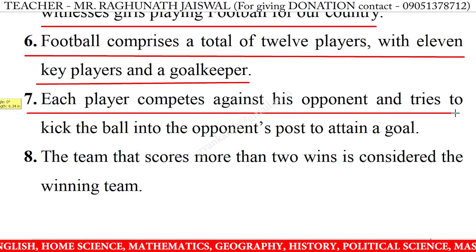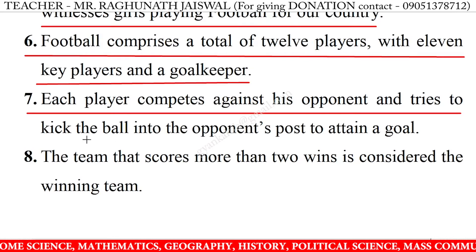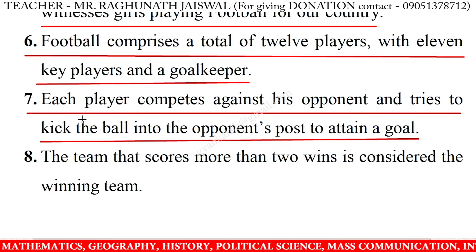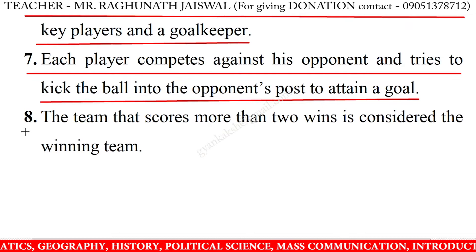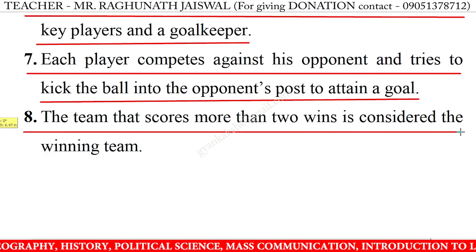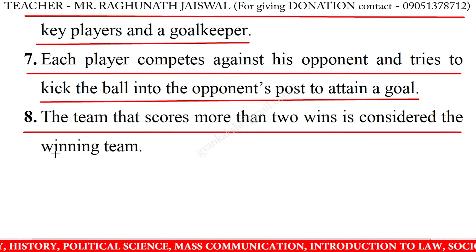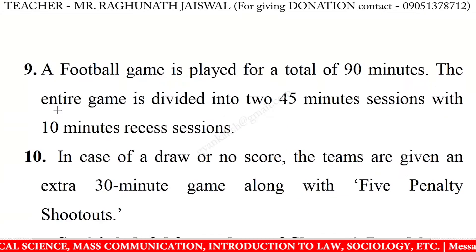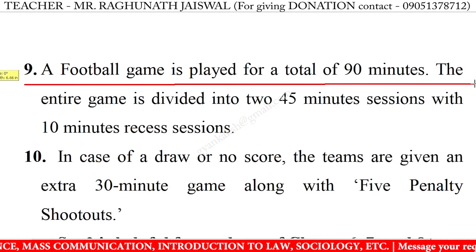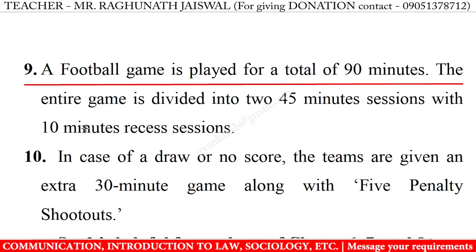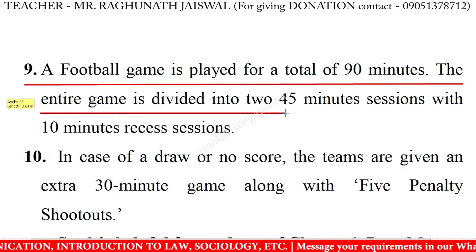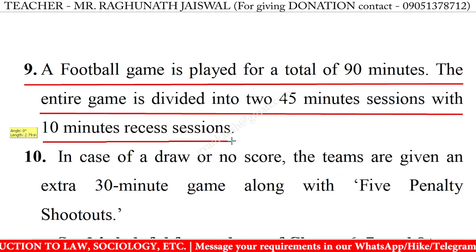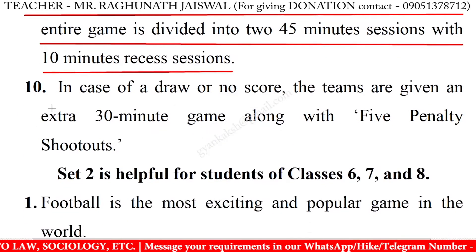6. Football comprises a total of 12 players with 11 key players and a goalkeeper. 7. Each player competes against his opponent and tries to kick the ball into the opponent's post to attain a goal. 8. The team that scores more than 2 wins is considered the winning team. 9. A football game is played for a total of 90 minutes, divided into two 45-minute sessions with a 10-minute recess.